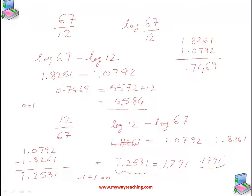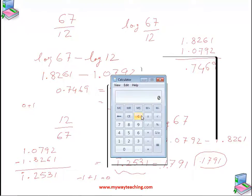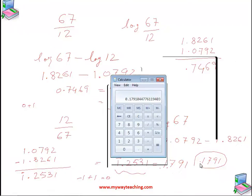We verify from the calculator: 12 divided by 67 gives 0.1791. From the log table we also get 0.1791. The answers match, confirming our log table calculation is correct.